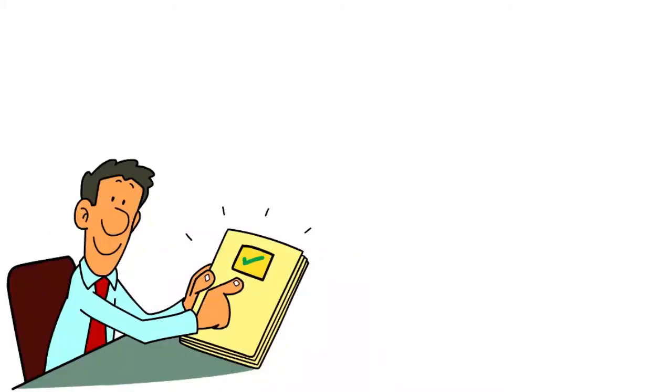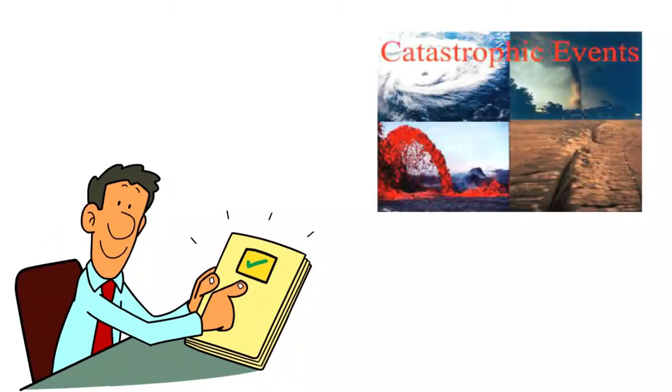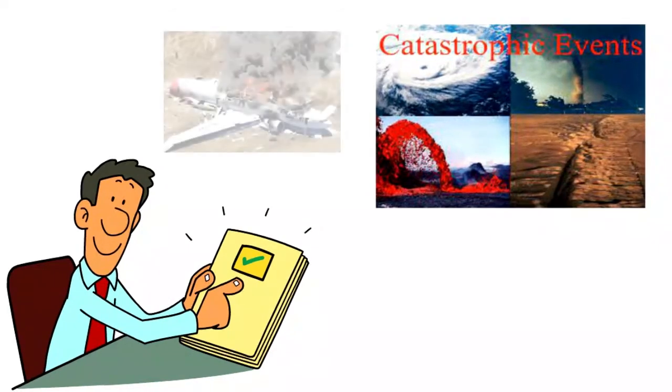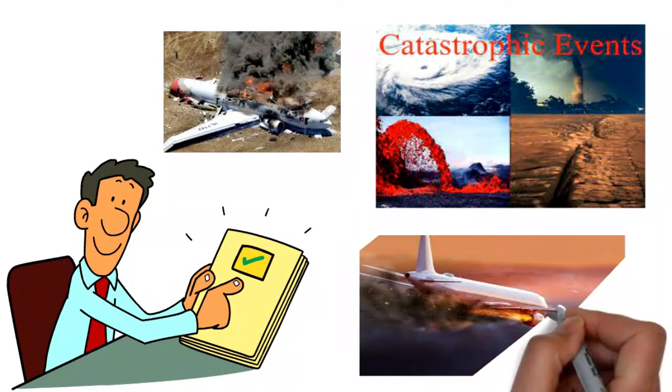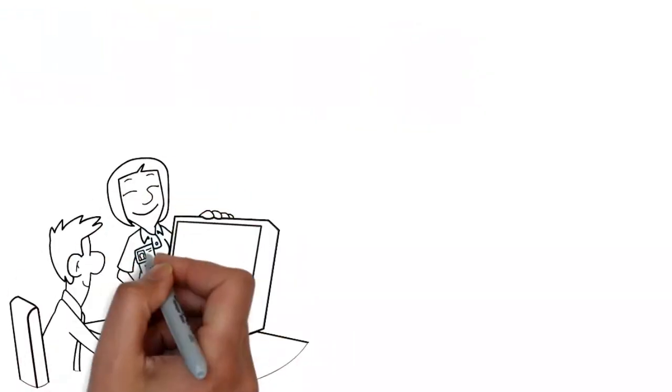In his book, Cialdini states that catastrophic events happened in serials. If an airplane crashes, the chance that a week later another airplane will crash rises. This is based on much research, which I will address later.